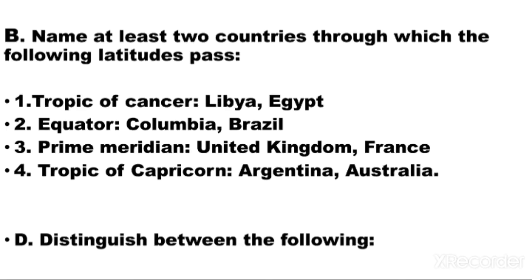Question number B: Name at least 2 countries through which the following latitudes pass. Number 1 is Tropic of Cancer — answer is Libya, Egypt. Question number 2 is Equator — Colombia and Brazil are answers. Question number 3 is Prime Meridian — United Kingdom and France are answers. Question number 4, Tropic of Capricorn — answers are Argentina and Australia.